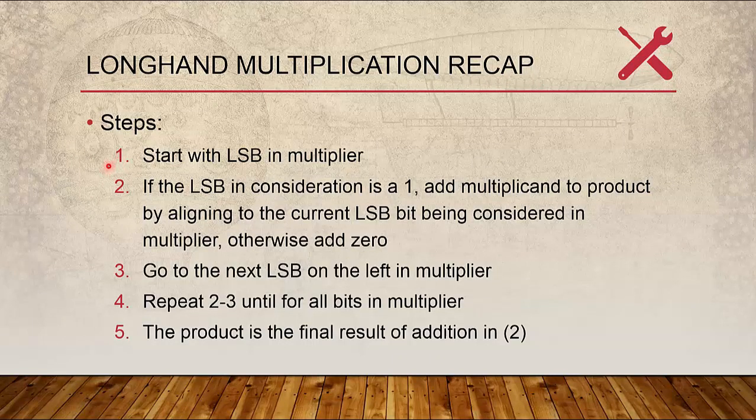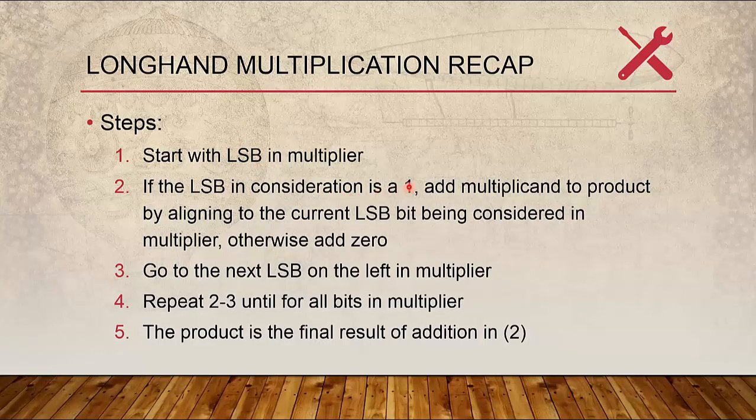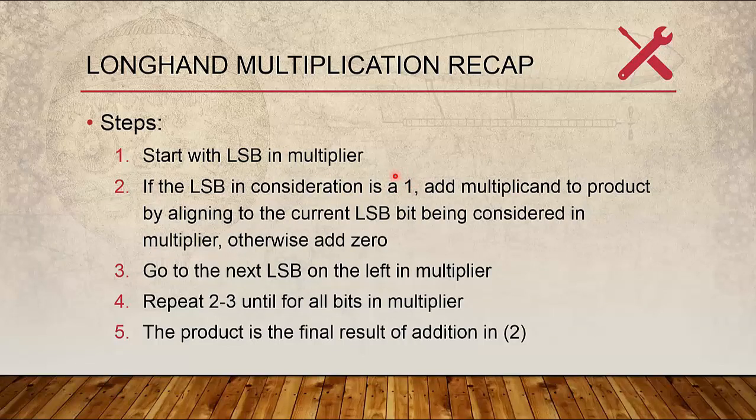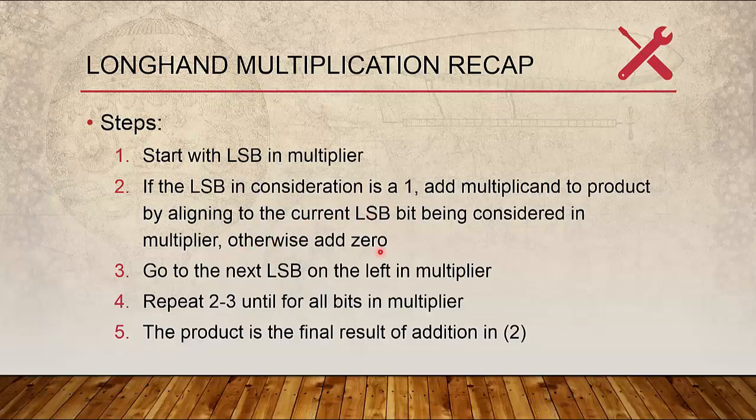The steps in Longhand Multiplication is as follows. First, we start with LSB in Multiplier. If it is a big one, add Multiplicand to product by aligning to the current LSB that is being considered in the Multiplier. Otherwise, we add zero.